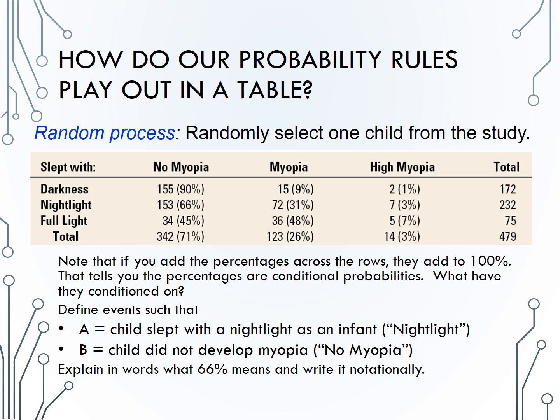Now let's look at an example. The following data is from a survey of 479 children. The parents were asked about the level of darkness in their child's room as a baby, and whether the child developed myopia or nearsightedness later in life. This is what we call an observational study. From the table, those who slept with a nightlight or in a fully lit room before age two had higher incidence of nearsightedness later in childhood. Note that if you add the percentages across the rows, they add to 100%, which tells you the percentages are conditional probabilities — conditioned on the slept-with variable, or the level of darkness in the child's room.